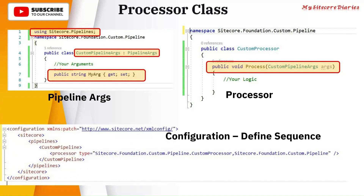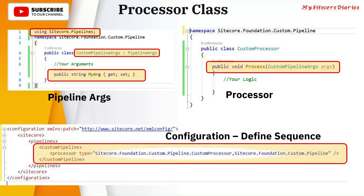For configuration, you add a patch file. In the patch file, you add it into the Sitecore pipeline, and then you add your custom pipeline as a processor type. You provide the complete class name with the full namespace, and then your DLL. This is how you define the patch file.